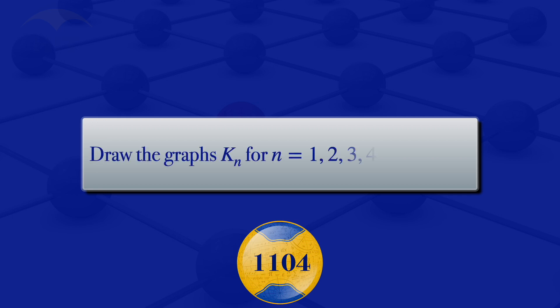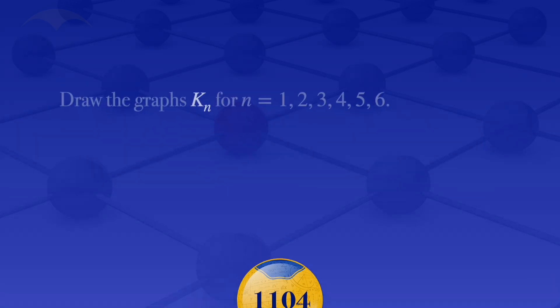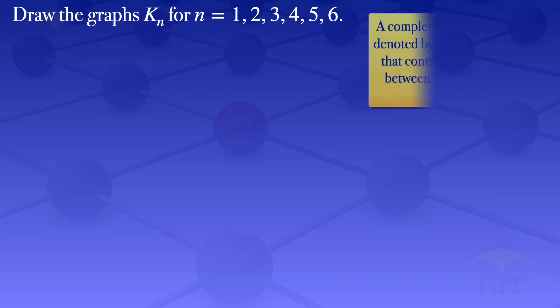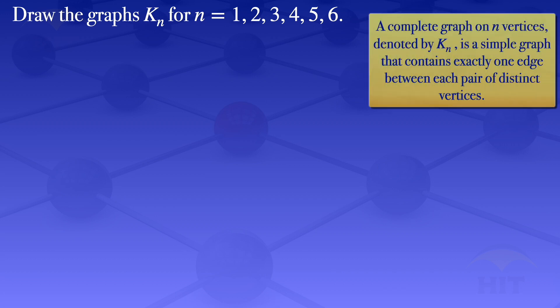In this video, I'm going to draw the graphs KN for N equals 1, 2, 3, 4, 5, and 6. To draw those graphs, I'll start by looking at the following information: a complete graph on N vertices, denoted by KN, is a simple graph that contains exactly one edge between each pair of distinct vertices. So in this case, we are asked to draw a complete graph with 1 vertex up to 6 vertices.